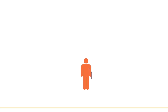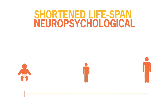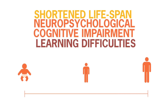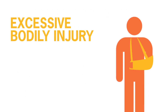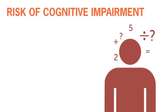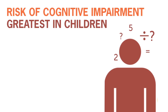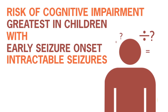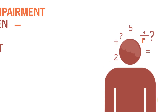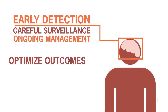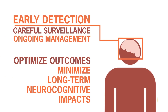Uncontrolled seizures can lead to a shortened lifespan, neuropsychological and cognitive impairment, learning difficulties, excessive bodily injury, and social disability. The risk of cognitive impairment associated with seizures is greatest in children with early seizure onset, intractable seizures, and infantile spasms. Early detection, careful surveillance, and ongoing management may help optimize outcomes and minimize some of the long-term neurocognitive impacts.